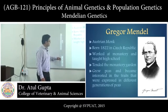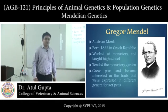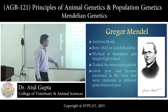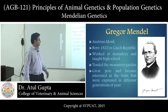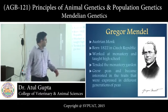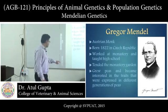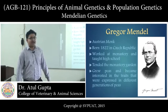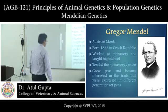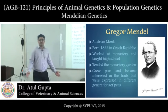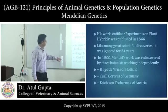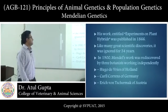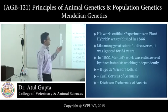He worked at a monastery and taught in a high school. Meantime he also tended the monastery garden, and in that garden he grew peas and became interested in the traits that were expressed in different generations of peas.